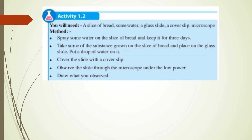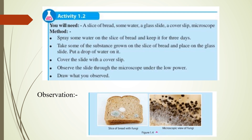In this practical, we are going to observe microorganisms on food. You will need a slice of bread, some water, a glass slide, a cover slip, and a microscope. The method is: spray some water on the slice of bread and keep it for three days. Take some of the substance grown on the bread and place it on the glass slide. Put a drop of water on it, cover the slide with a cover slip, and observe through the microscope under low power. We can then see fungi on the slice of bread and observe the fungi through the microscope.